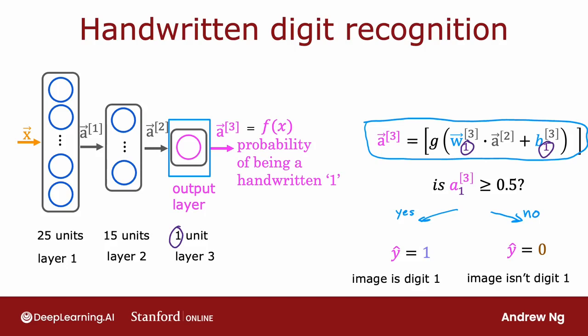Because this computation goes from left to right, you start from x, then compute a1, then a2, then a3, this algorithm is also called forward propagation, because you're propagating the activations of the neurons. So you're making these computations in the forward direction from left to right. And this is in contrast to a different algorithm called backward propagation, or back propagation, which is used for learning. And that's something you learn about next week.